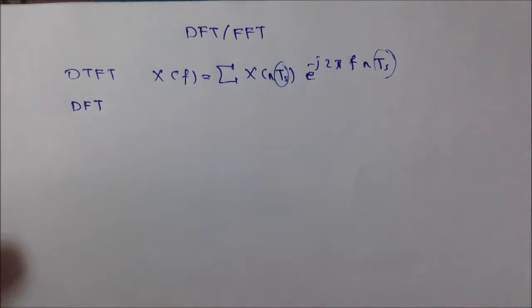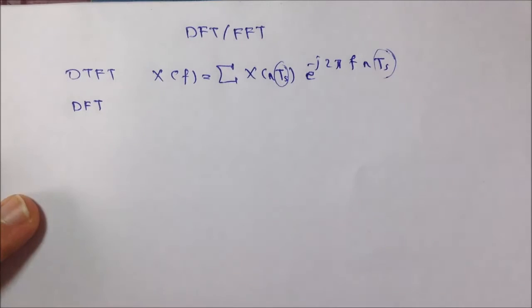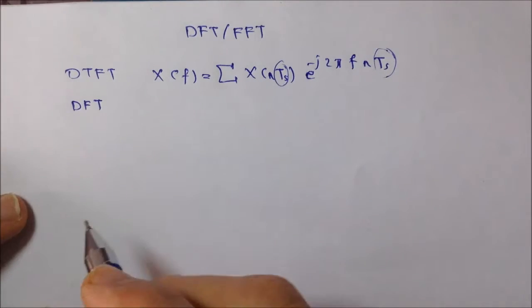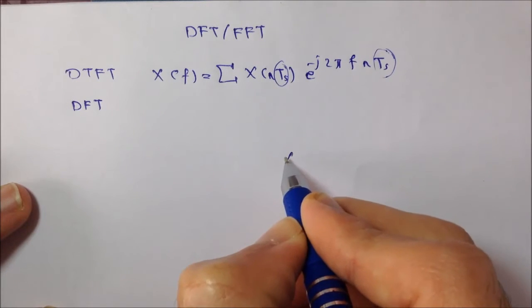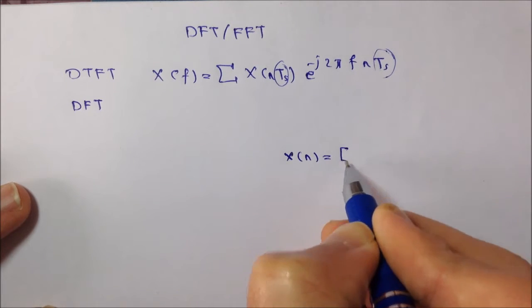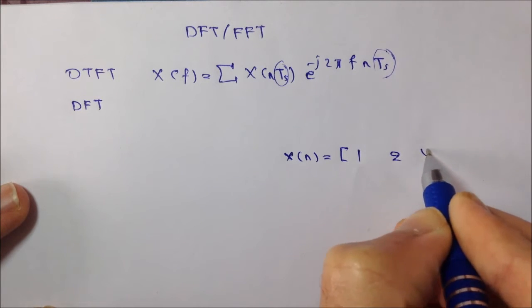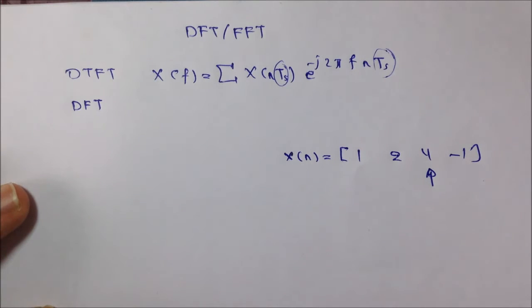But before that, I would like to give you a motivation. Why would we like to get rid of Ts? Why would we like to eliminate it? Now, in practical application, you may encounter a discrete signal like this: X(n) equals 1, 2, 4, minus 1, just any sequence.